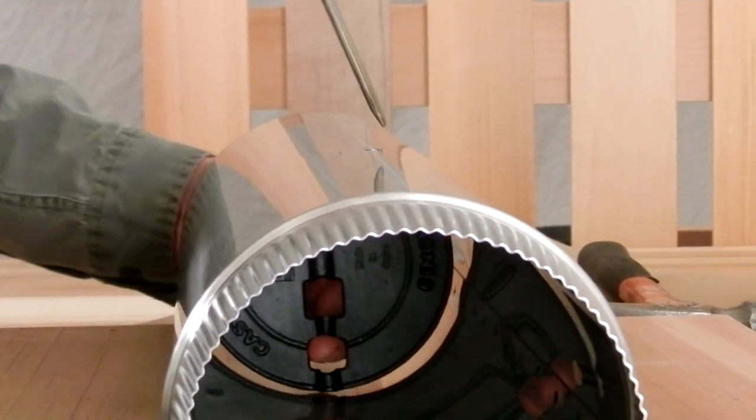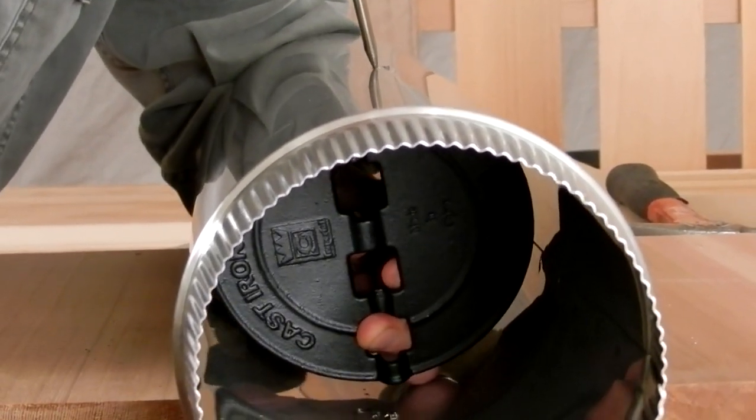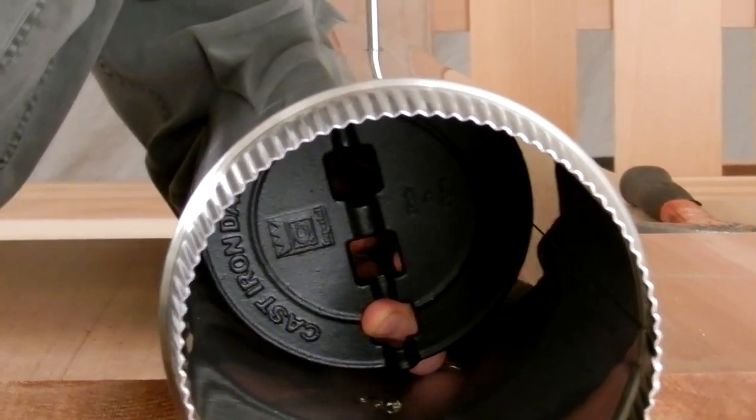You should now have two holes directly across from one another on the pipe. Position the damper and rod through to secure it in place.